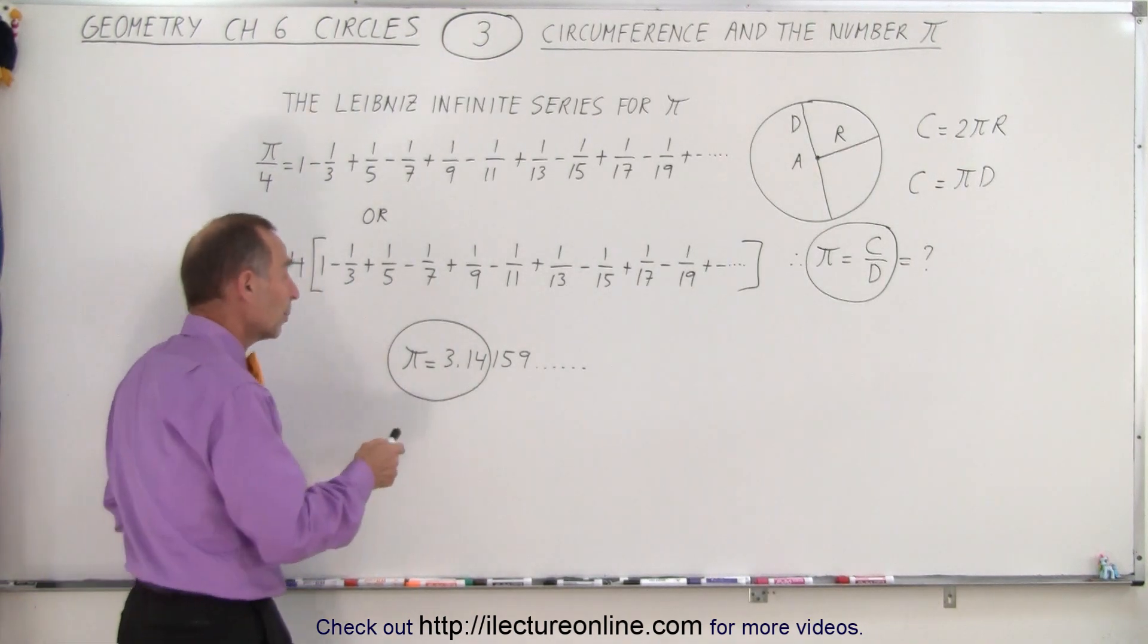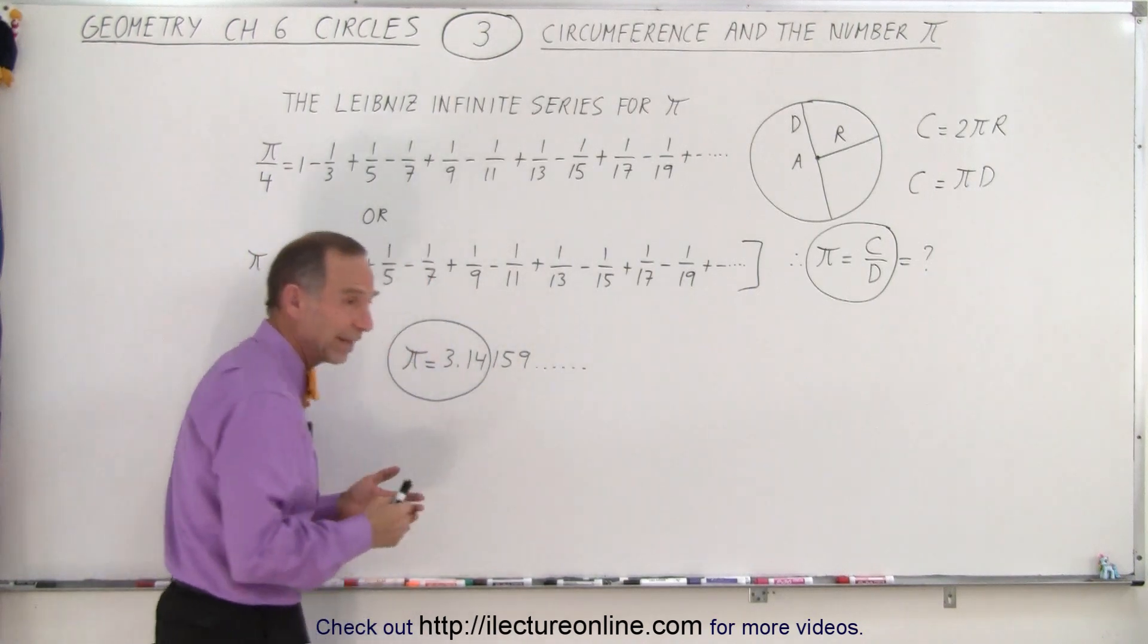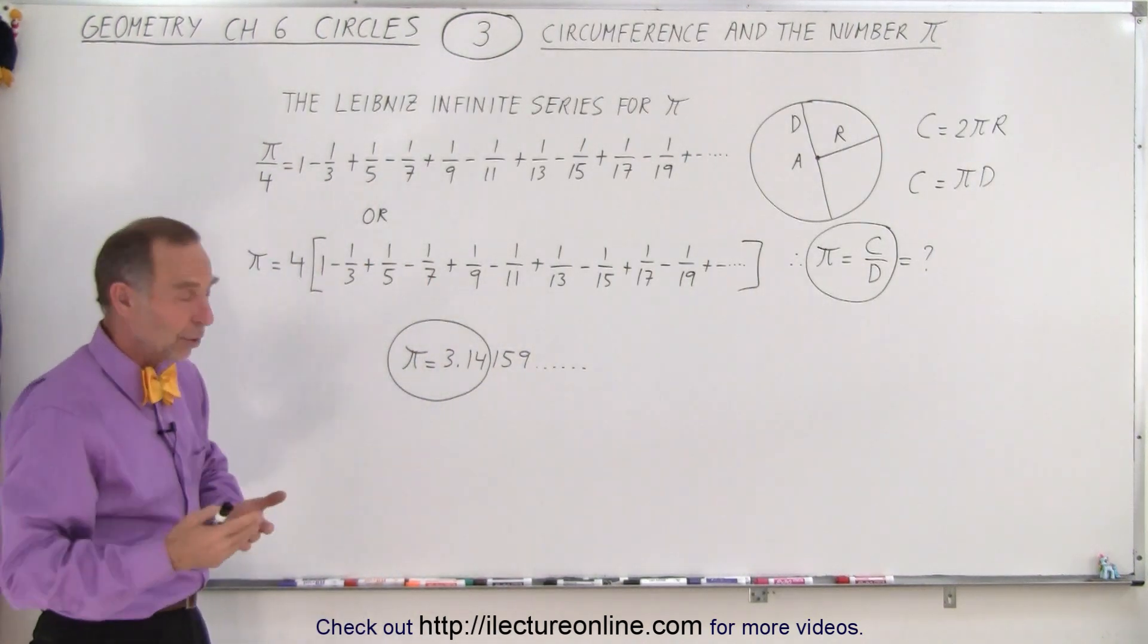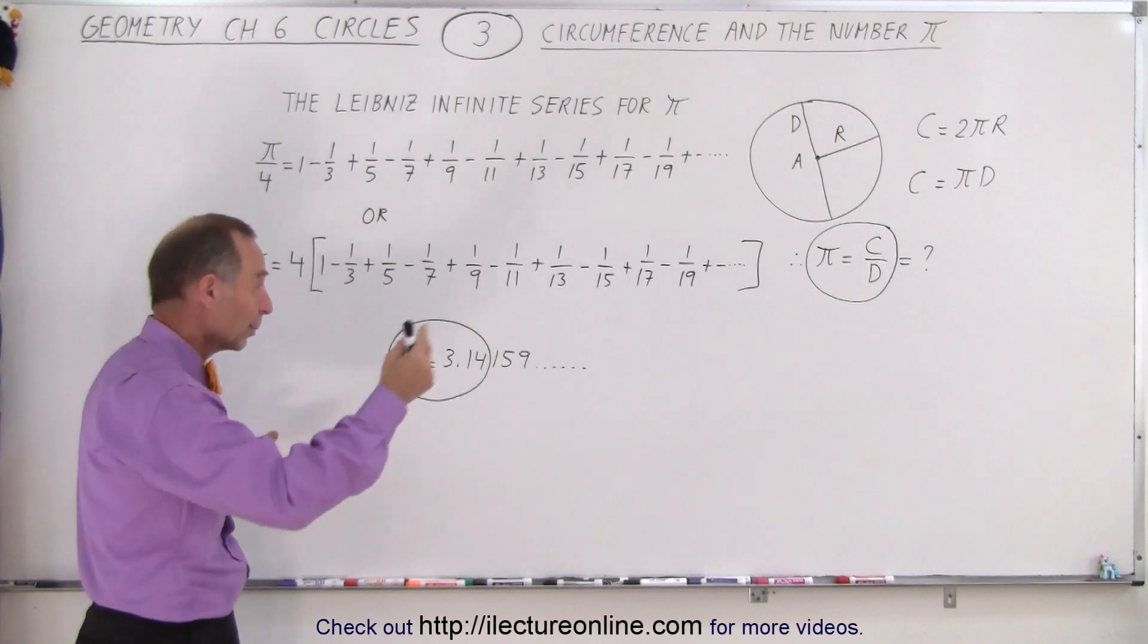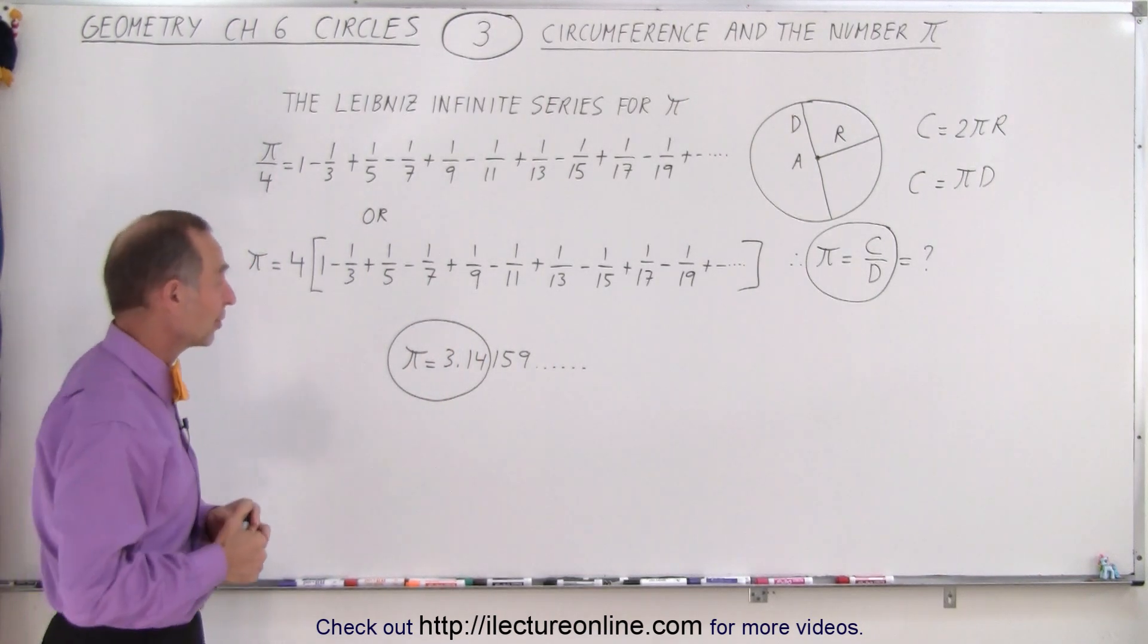So to 5 decimal places, the number π is 3.14159, and it just keeps going. It's not a repeating decimal, so in order to find it to many decimal places, you just need to keep calculating it. Nowadays, of course, they use computers for that.